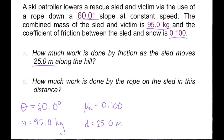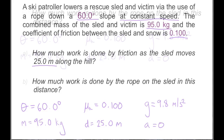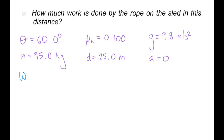There are a couple of values not explicitly given but which we can infer. The first is the acceleration of gravity: 9.8 meters per second squared. Notice also that the sled is moving at constant speed, meaning acceleration equals zero. Now let's define variables for what we're looking for. Part A asks for the work done by friction — we'll call that WF. Part B asks for the work done by the rope — we'll call that WT, where T stands for the tension force in the rope.